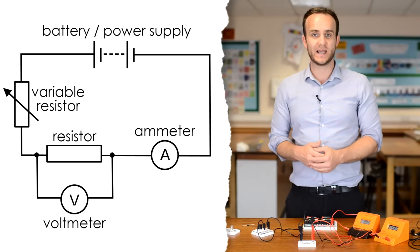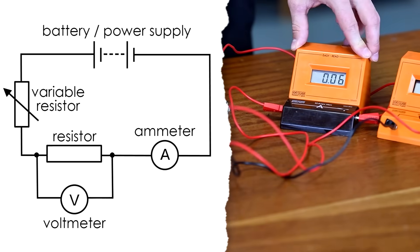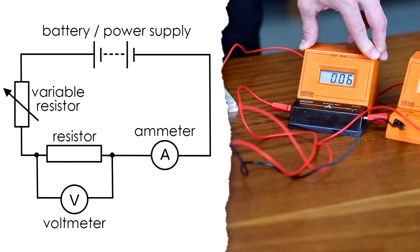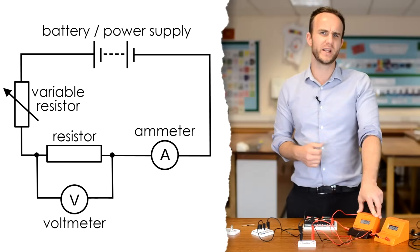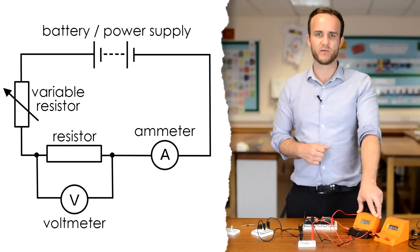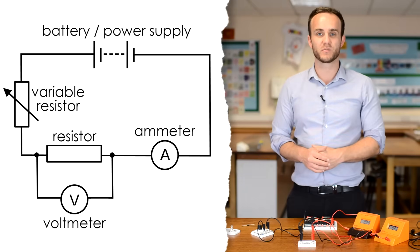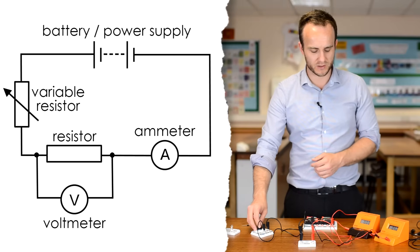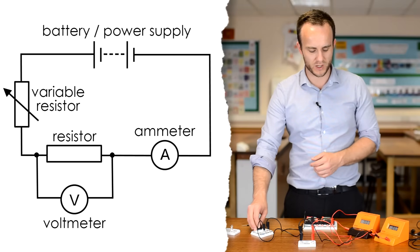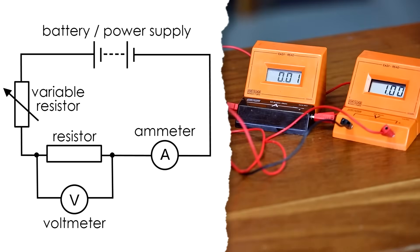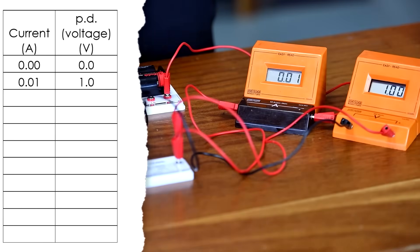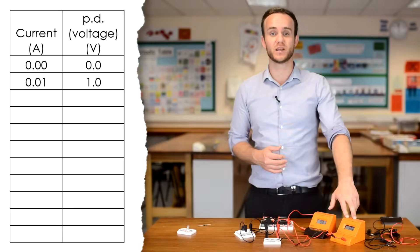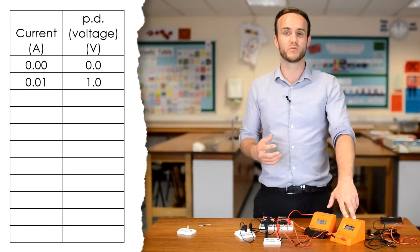Now, because we're dealing with fairly low currents, 0.06 amps is the maximum that I'm getting here. That's okay, because we only need, say, five readings for the current and the voltage. What I'm going to do is start at 0 amps. I'm going to bring my current up to 0.01 amps using the variable resistor. And we're going to go up in 0.01 amps. What's the voltmeter reading? Well, it's reading exactly one volt, so 1.00.